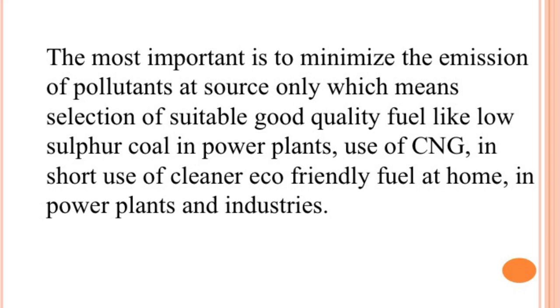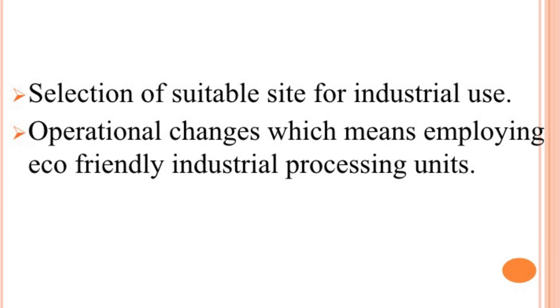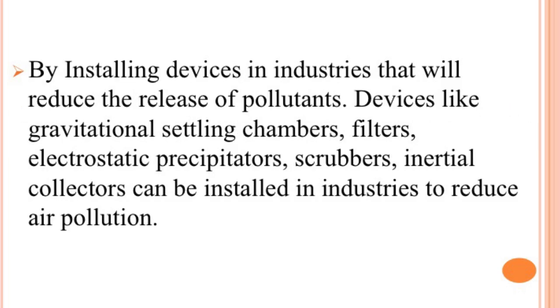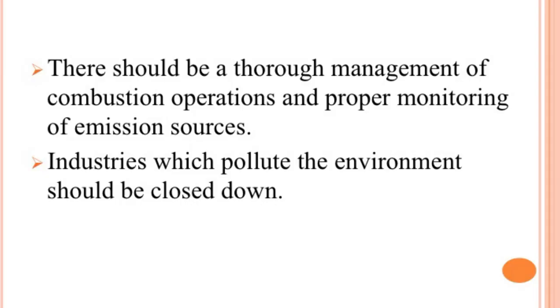Use of cleaner, eco-friendly fuel at home, in power plants and in industries is essential. Selection of suitable sites for industrial use and employing eco-friendly industrial processing units are also important. Installing devices in industries that reduce the release of pollutants — such as gravitational settling chambers, filters, electrostatic precipitators, scrubbers, and inertial collectors — can significantly reduce air pollution. Use of tall chimneys reduces air pollutants at ground level. There should be thorough management of combustion operations and proper monitoring of emission sources.